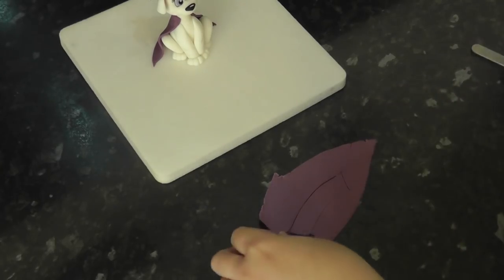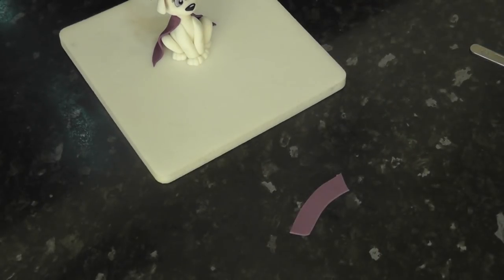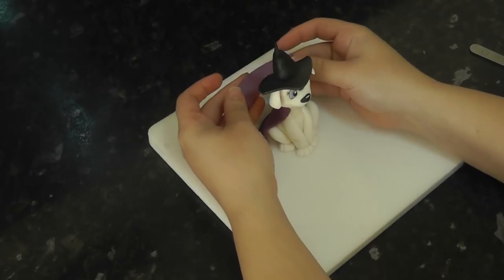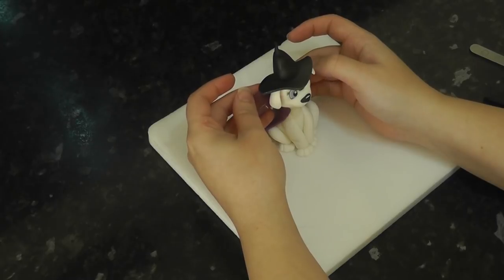Then for the collar, cut out, whatever this shape is. It's an arched strip. And stick it around the neck. Above your trapezoid.